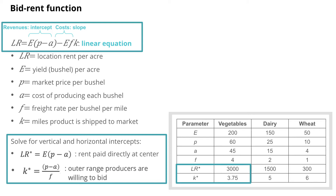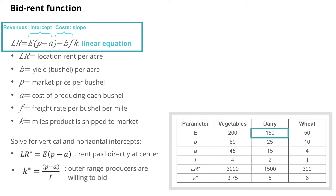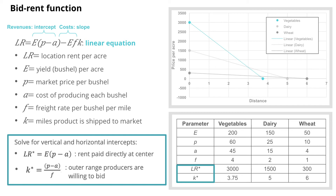For wheat, which needs a larger area to support the same number of bushels, it's a lower-density crop — less valuable but also lower input costs. Solving for LR and K in each case, we can now plot these on a graph. We have a bid-rent curve for vegetables, one for dairy, and one for wheat. This is really the primary innovation that von Thunen is exploring: translating the features of each individual product into a distance from the market.